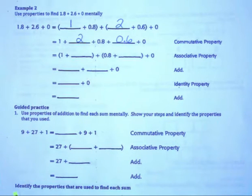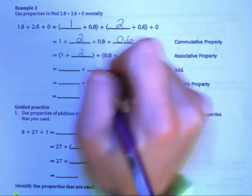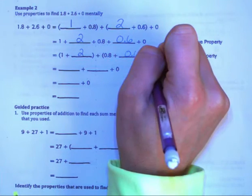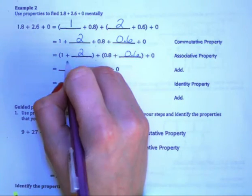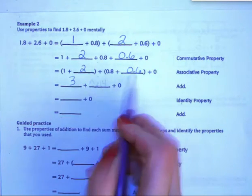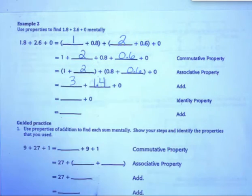Now we are going to do some grouping. So we are going to put parentheses around 1 and 2 because we want to group those together. And then around 8 tenths and 6 tenths because we would like to group those together. 1 plus 2 is 3. 8 tenths plus 6 tenths would equal 1.4 or 1 and 4 tenths plus 0.